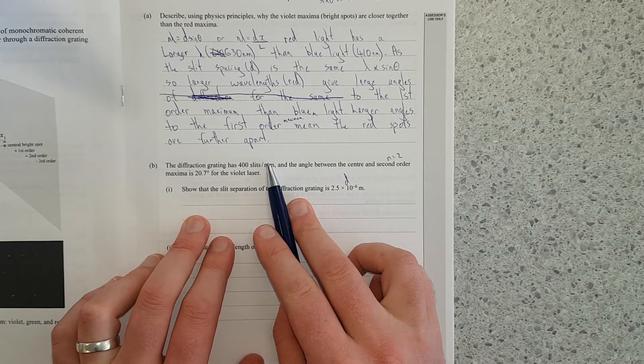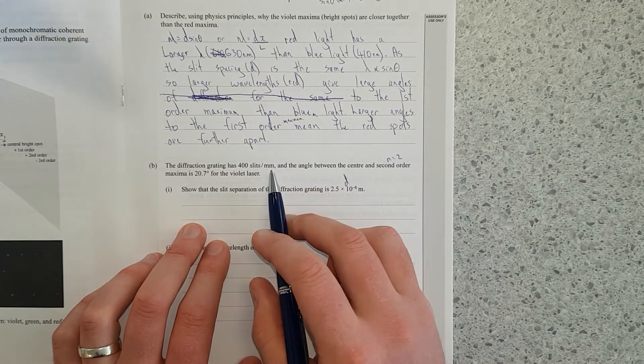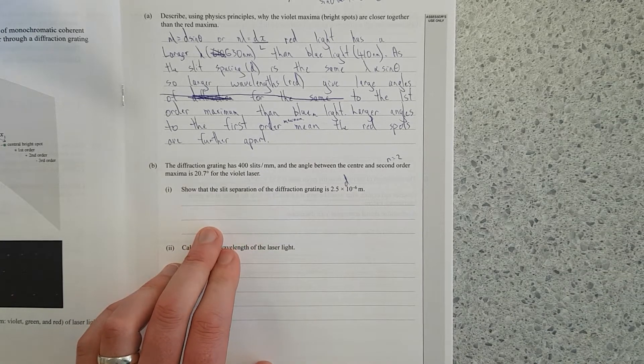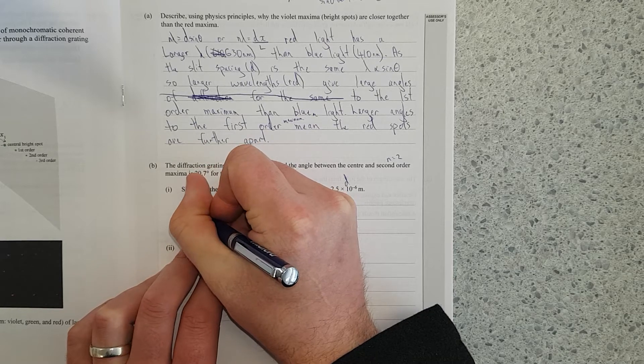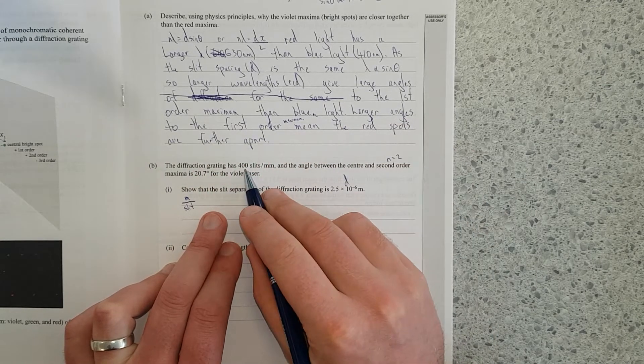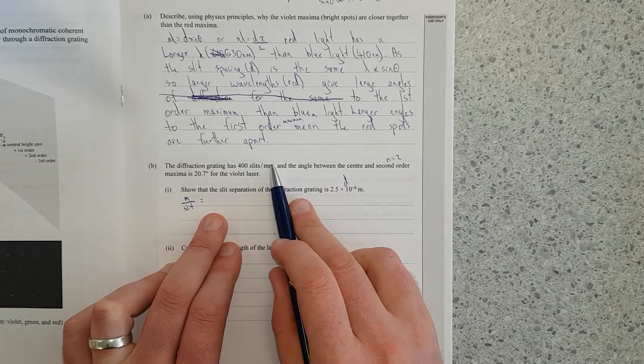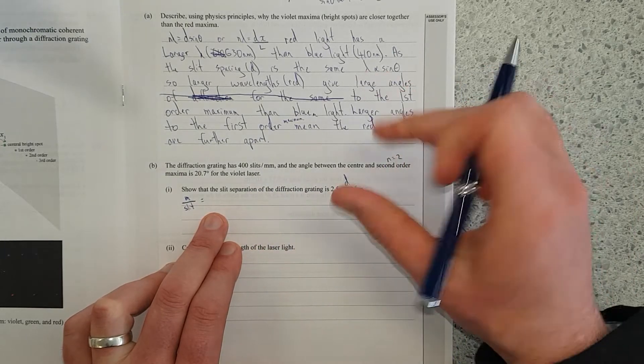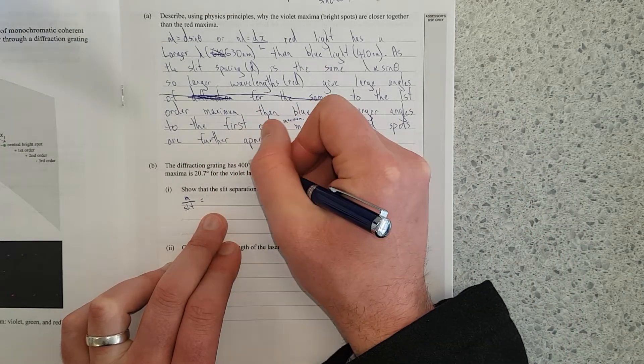If you want to find out what the actual length is, you need to do the inverse of this. I've got slits per millimeter, I want meters per slit. There you go, that's the way to do it. So I've got 400 slits in one millimeter. So what I'm going to do is divide this by a thousand to find out how many slits per meter.